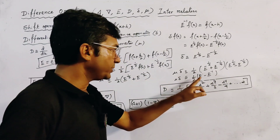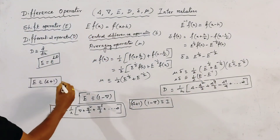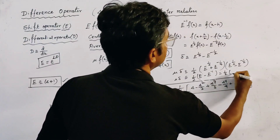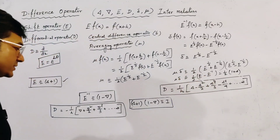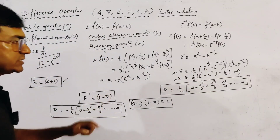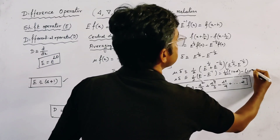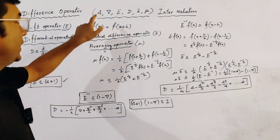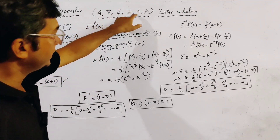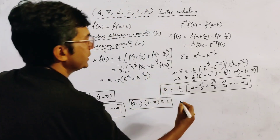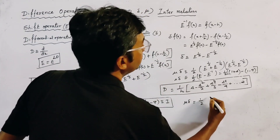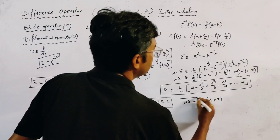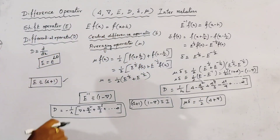Substituting the values of E = (1 + delta) and E inverse = (1 - nabla), we get μδ = (1/2)[(1 + delta) - (1 - nabla)], and simplifying — the 1s cancel — gives μδ = (1/2)(delta + nabla). This is an important relation connecting the forward difference operator, backward difference operator, central difference operator, and averaging operator.